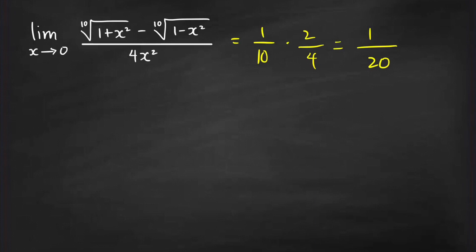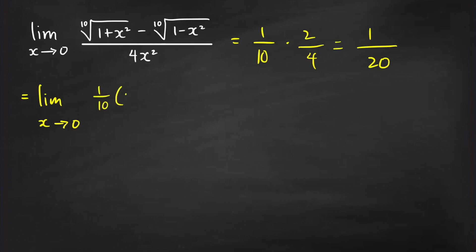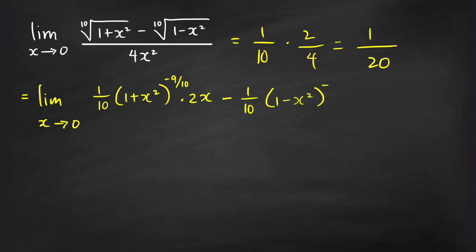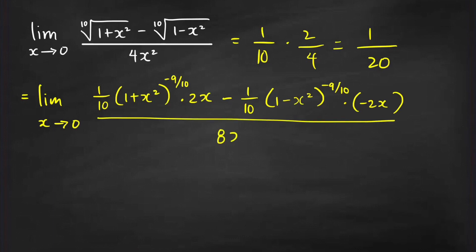Again, if you want to check our answer by applying L'Hôpital's rule, this is equal to the limit as x goes to 0. You apply the extended power rule here. The power is 1 over 10, and you apply the power rule with the chain rule. So you get 1 over 10 times (1 plus x squared) raised to 1 over 10 minus 1, which is negative 9 over 10, times the derivative of the base which is 2x. Minus 1 over 10 times (1 minus x squared) raised to negative 9 over 10, times the derivative of the base which is negative 2x. All over the derivative of the denominator which is equal to 8x.